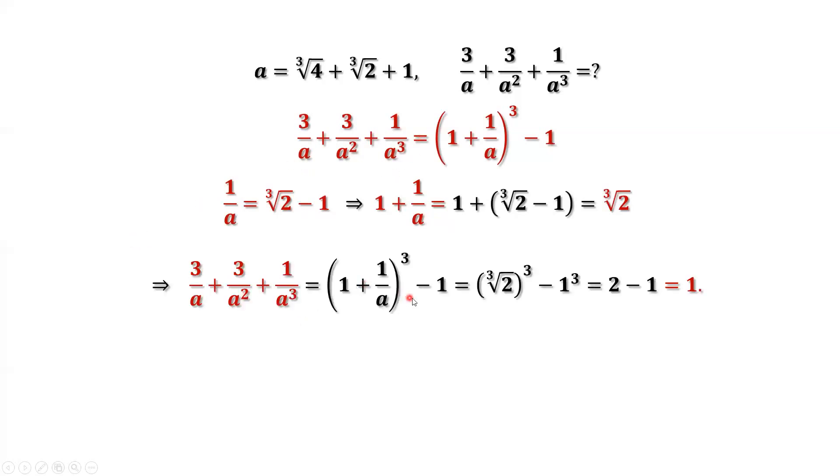The answer is we replace this part by the third root of 2. The third root and the power of 3 cancel each other. We have 2 here. 1 to the power of 3 equals 1. That's 1. 1 is the answer. That's all. Thanks for watching and I'll see you next time.